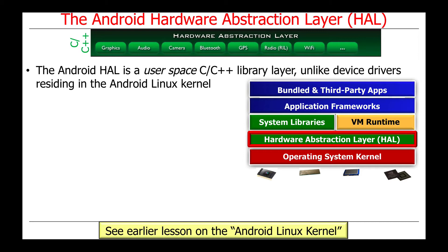When you program at the operating system kernel level, there's a very small number of APIs written in C that are available to access the various device driver capabilities inside the kernel device driver layer. These typically include functions like open, close, read, write, ioctl, poll, and so on, which don't really give you a very good insight into what the capability is that you're providing from a programming point of view.